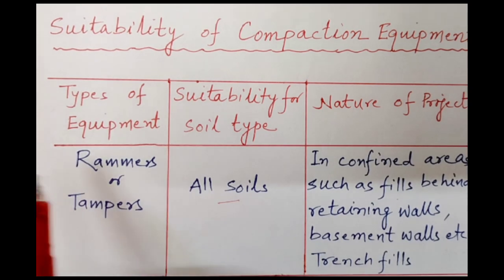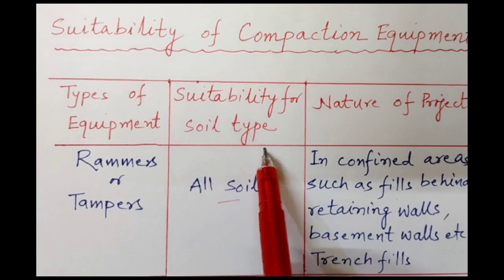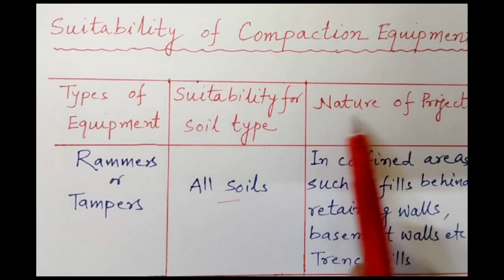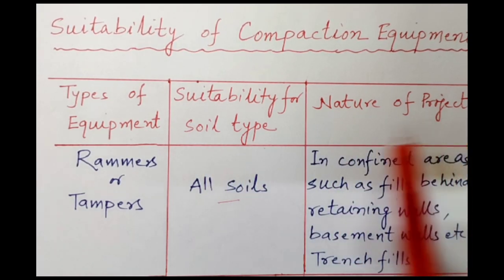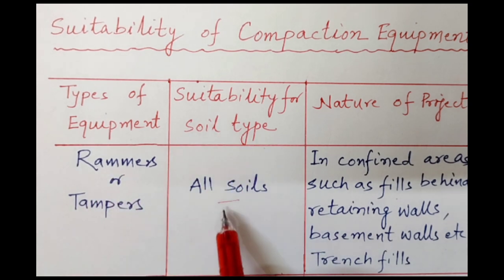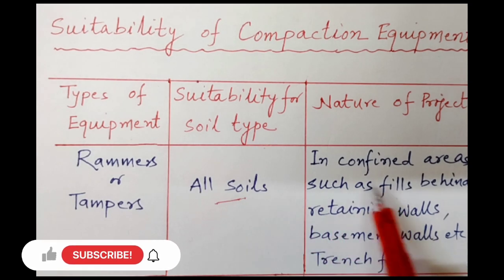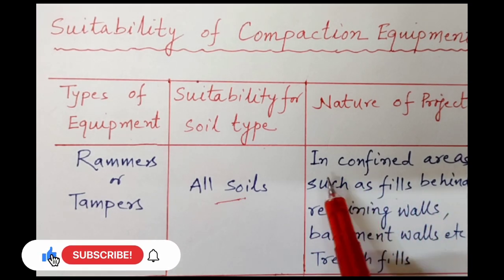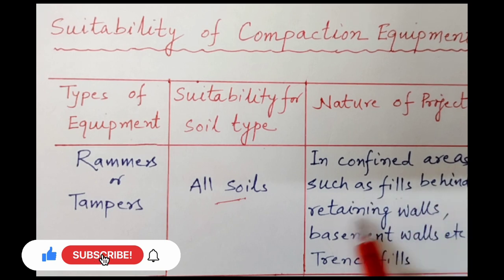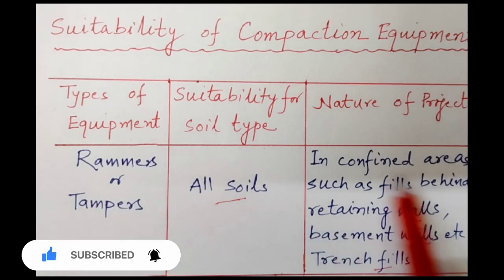We have different types of equipment. Here, suitability depends on soil type and nature of the project. For example, rammers or tampers are suitable for all types of soil. In confined areas such as fills behind retaining walls, basement walls, and trench fills, rammers are suitable for these projects.